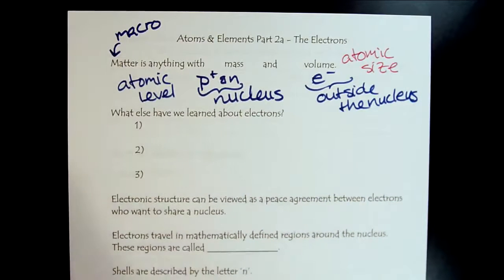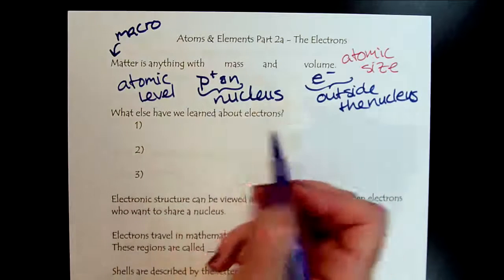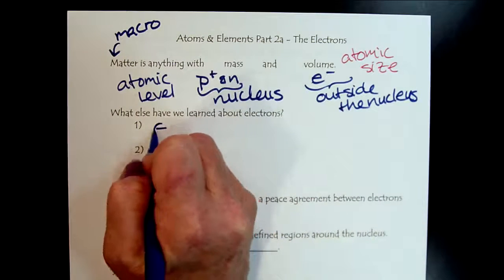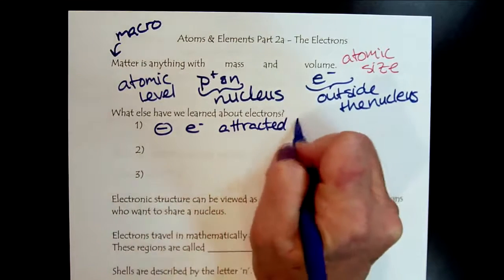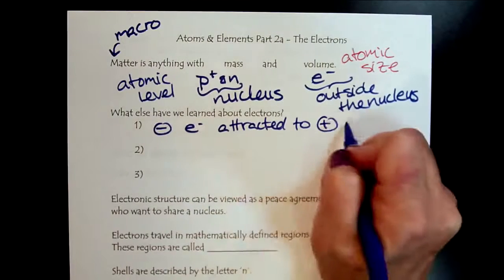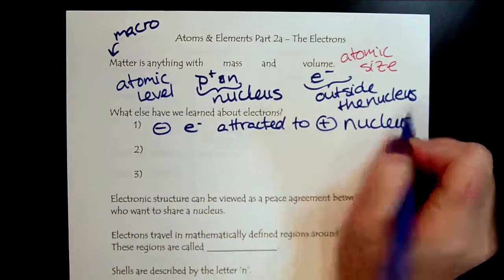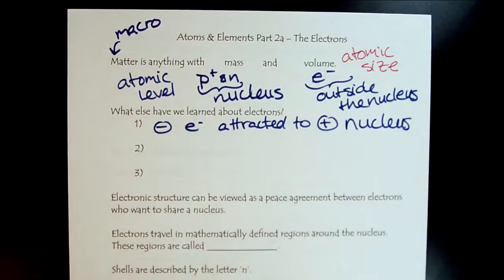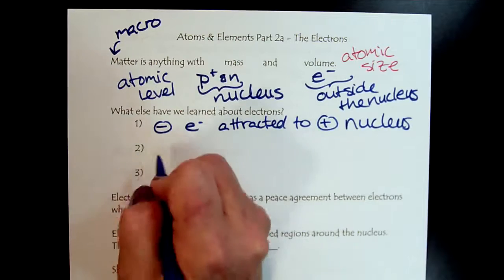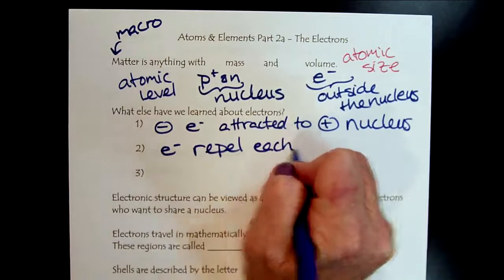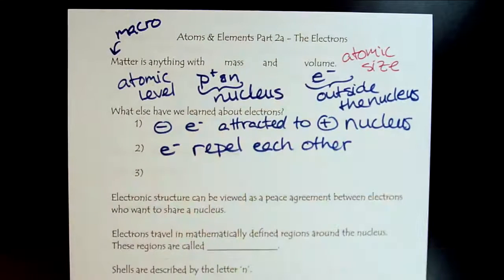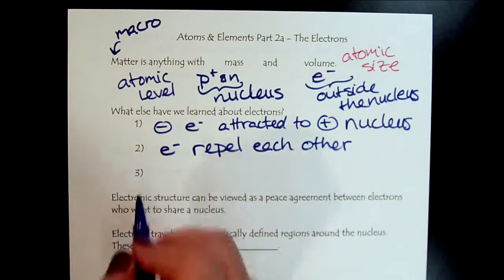So what else do we know about electrons? Well, we know that opposites attract, so the negative charge on the electrons is attracted to the positive charge of the nucleus, which of course is the protons. So that's what holds the atom together, this electrostatic attraction. But at the same time, we know that electrons repel each other. And we also know that electrons are constantly moving.